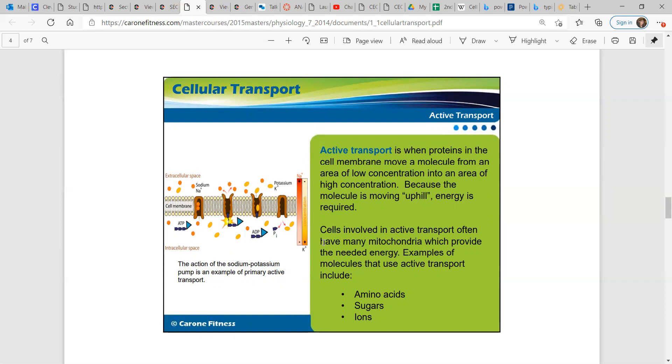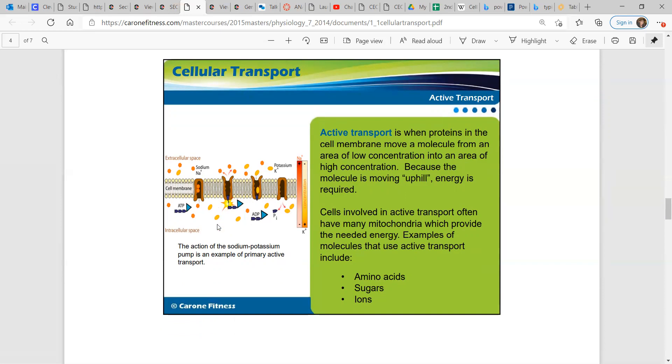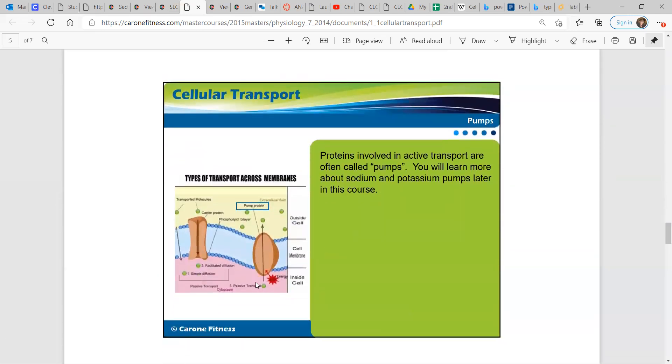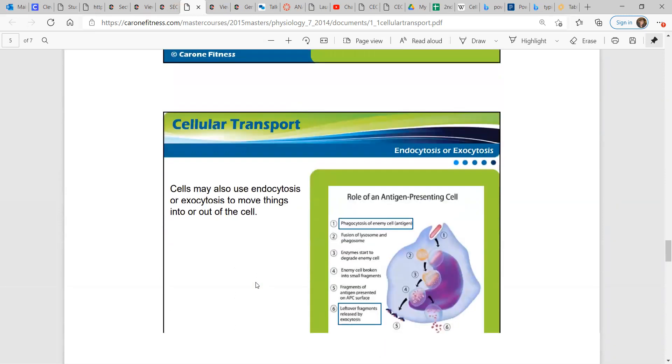Examples of molecules that use active transport include amino acids, sugars, and ions. The action of the sodium-potassium pump is an example of primary active transport, and we'll learn about that later. Proteins involved in active transport are often called pumps, and we're going to learn more about sodium and potassium pumps later.